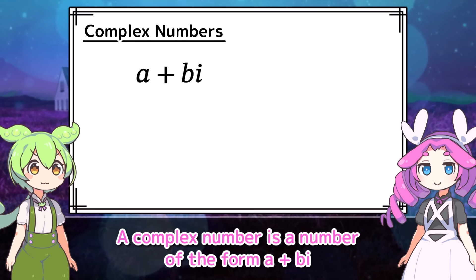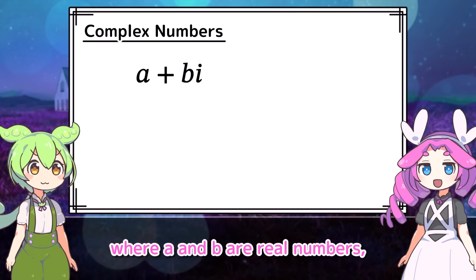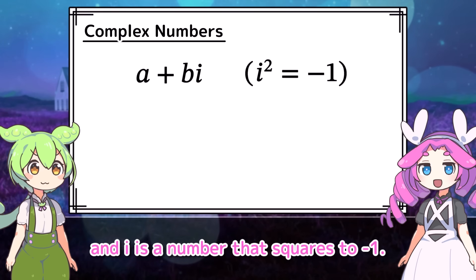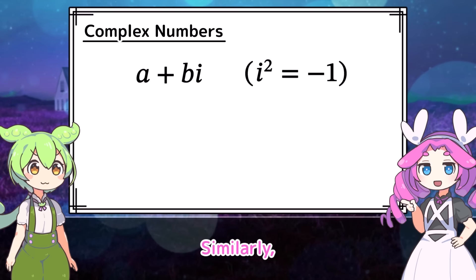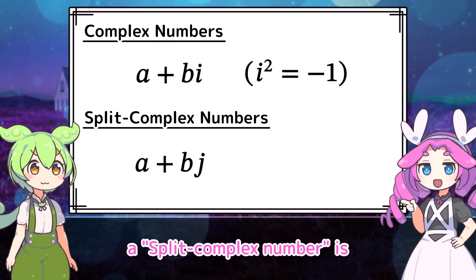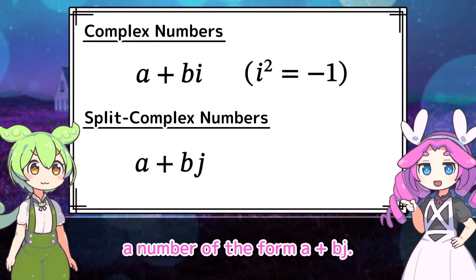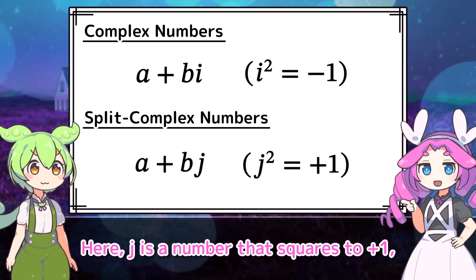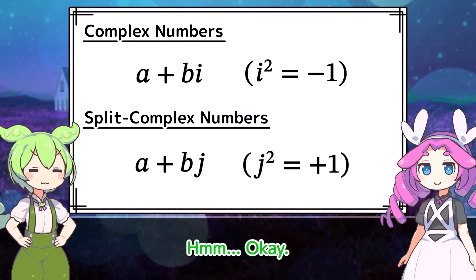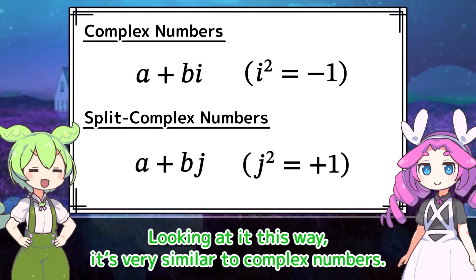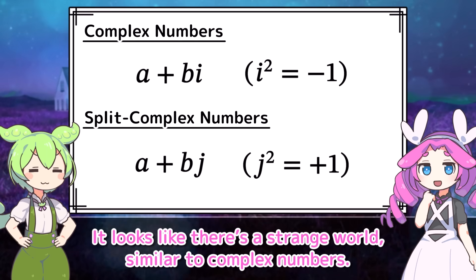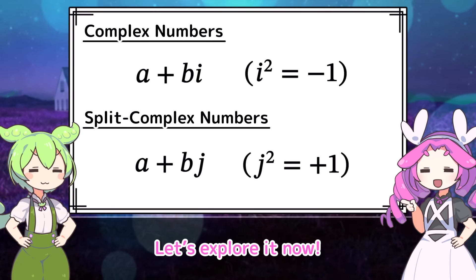A complex number is a number of the form a plus bi, where a and b are real numbers, and i is a number that squares to negative 1. Similarly, a split complex number is a number of the form a plus bj. Here, j is a number that squares to positive 1, but it's not a real number. Looking at it this way, it's very similar to complex numbers. It looks like there's a strange world similar to complex numbers. Let's explore it now.